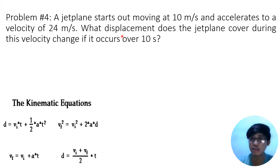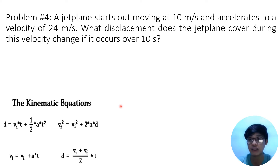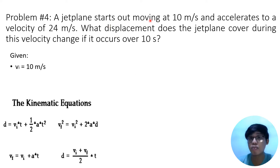So we're looking for displacement of the jet plane within a period of 10 seconds. Like what we did in the previous questions, we need to identify the three variables. The initial velocity here is 10 meters per second — it starts out moving at 10 meters per second, so we have the keyword 'it starts,' meaning that is the initial velocity.